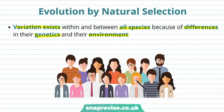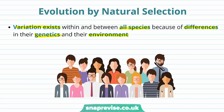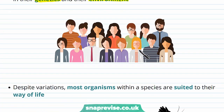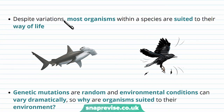There are many factors which can be different. For example, you just have to look at a group of humans to see differences in things like height, hair colour, skin tone, voice — everything about us. But despite particular variations, most organisms and most species are suited to their way of life.